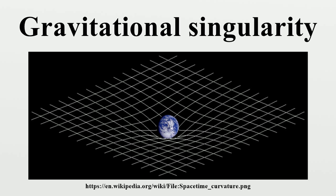An example of such a conical singularity is a cosmic string. Naked: Until the early 1990s, it was widely believed that general relativity hides every singularity behind an event horizon, making naked singularities impossible. This is referred to as the cosmic censorship hypothesis. However, in 1991, physicists Stuart Shapiro and Saul Teukolsky performed computer simulations of a rotating plane of dust that indicated that general relativity might allow for naked singularities. What these objects would actually look like in such a model is unknown, nor is it known whether singularities would still arise if the simplifying assumptions used to make the simulation were removed.